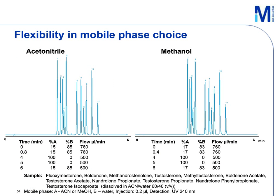Another flexibility monolithic columns provide is choice of mobile phase. For HPLC or UHPLC analysis, our first choice of organic solvent is usually acetonitrile because it gives the lowest viscosity and hence lower back pressures. However, for LC-MS analysis, mass specs actually prefer methanol, as the methanol-water blend provides higher ionization efficiency than acetonitrile-water. With the extremely low back pressures monolithic columns provide, we can now freely choose the most suitable organic mobile phase — such as ethanol or even isopropanol — without worrying about their higher viscosity.